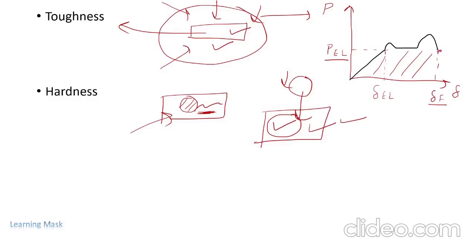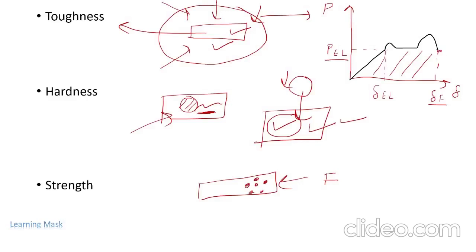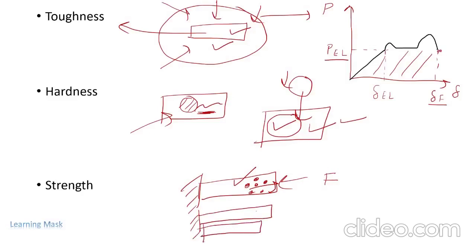The next property we will discuss is strength. Suppose we have a material and we apply a compressive force. Internal resisting forces are developed inside the material which resist the deformation. If we apply force to the material, it should deform, but internal resisting forces develop in the opposite direction and resist this deformation. This internal resisting force is known as the strength of the material.